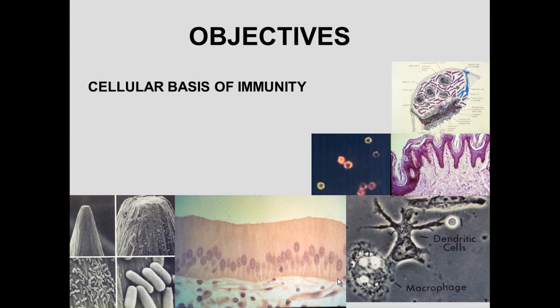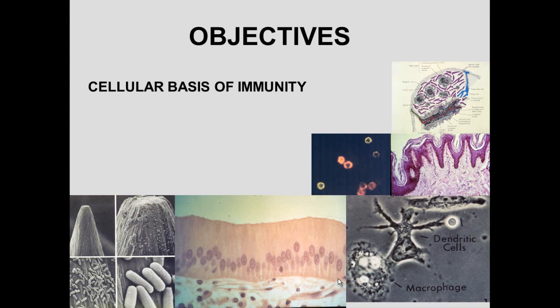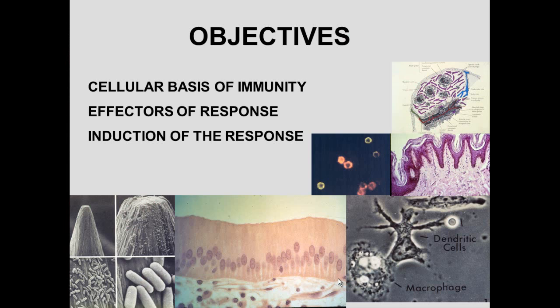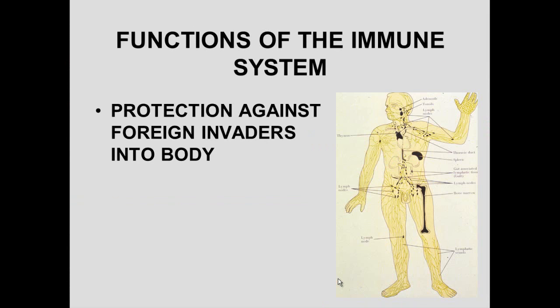The objectives for lymphoid tissue are to look at the cellular basis of immunity, the effectors of response, a bit about the induction of the response, and recycling and ontogeny — where it all comes from. The function of the immune system is to protect against foreign invaders of the body.